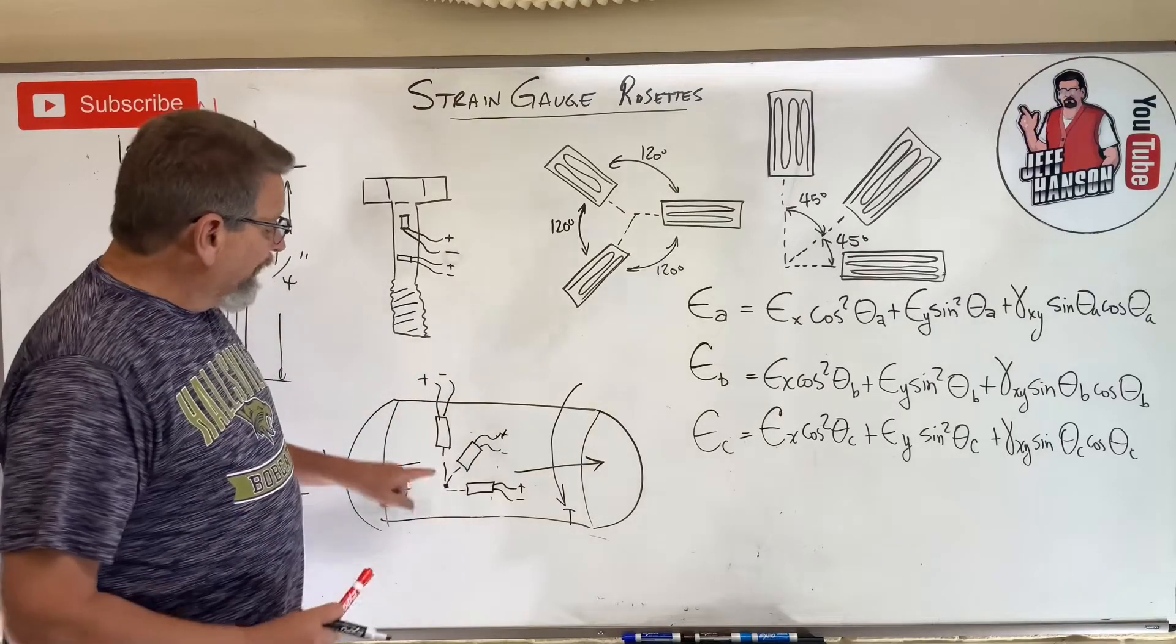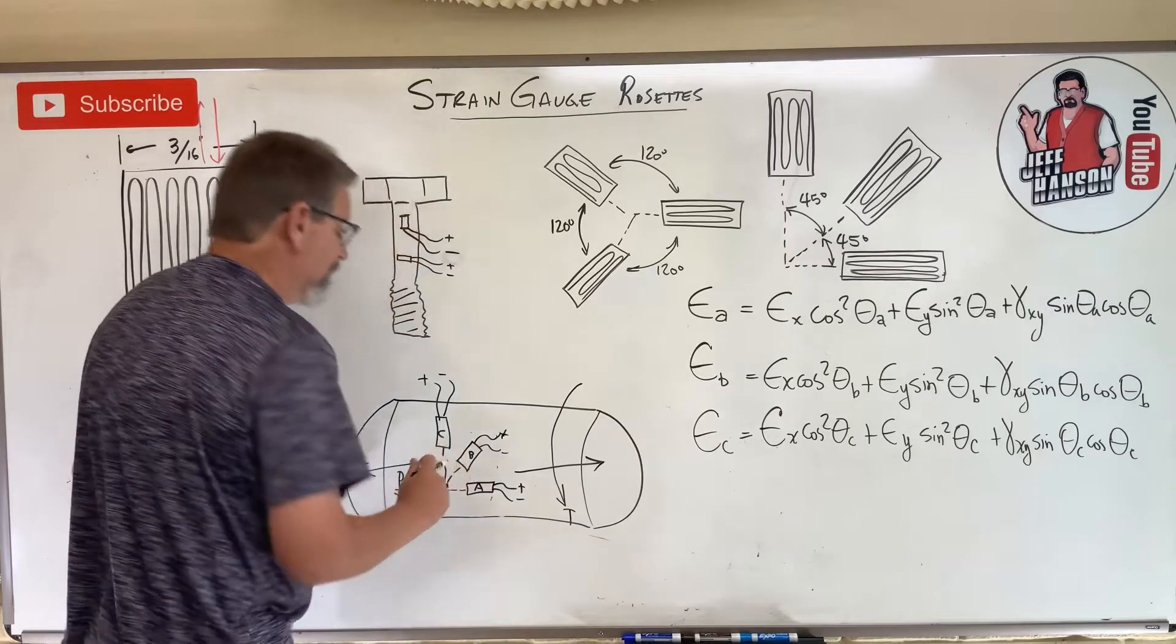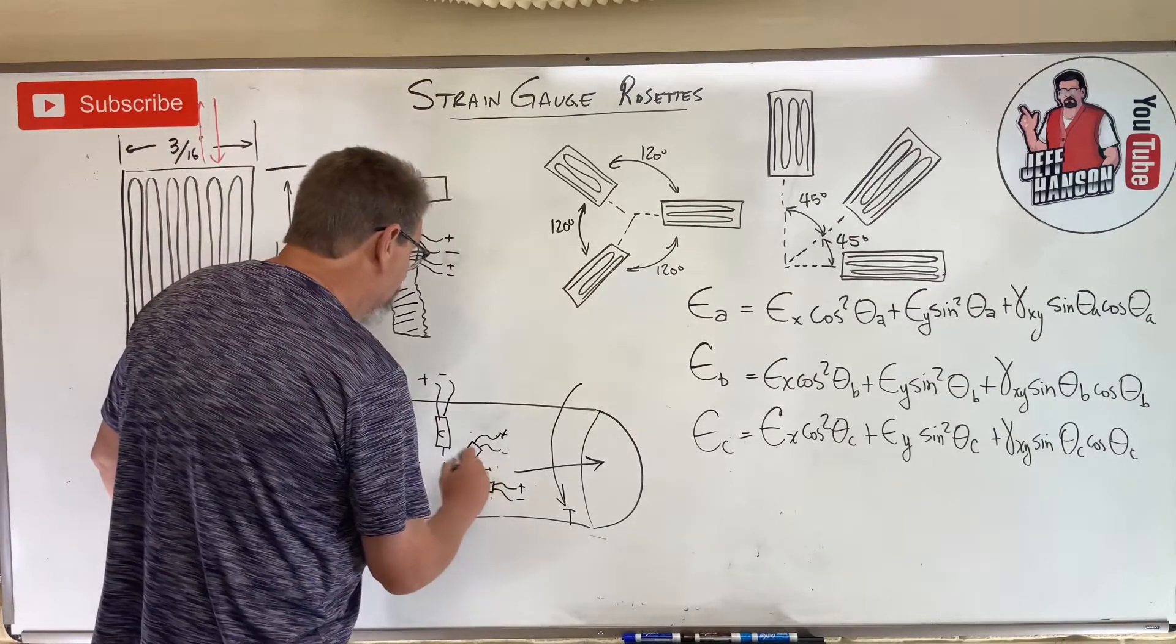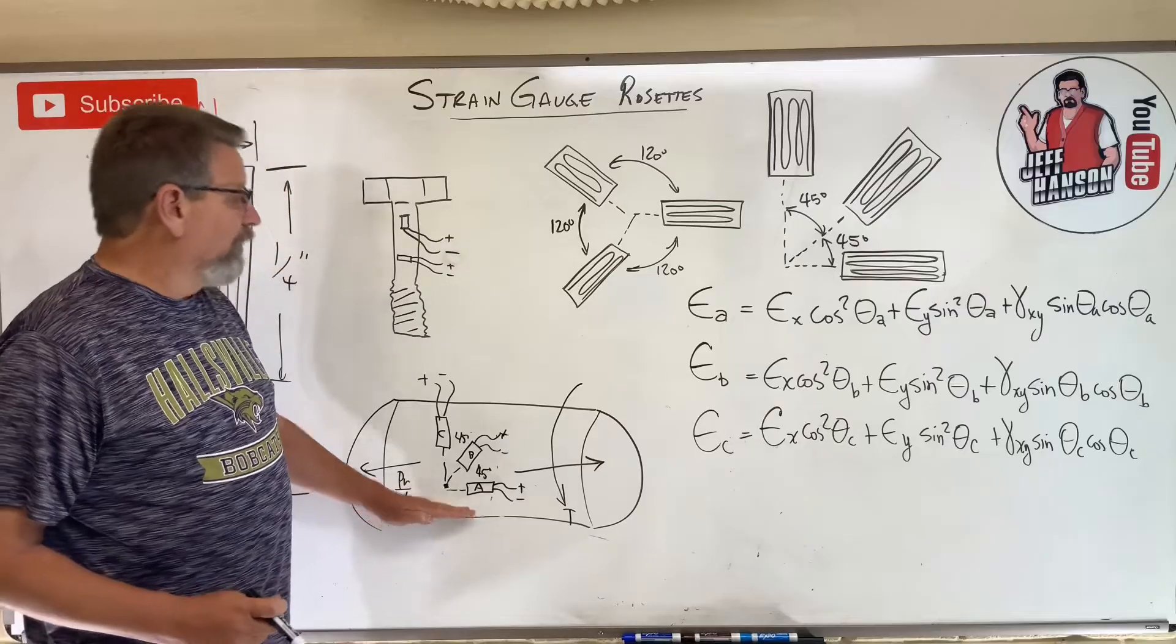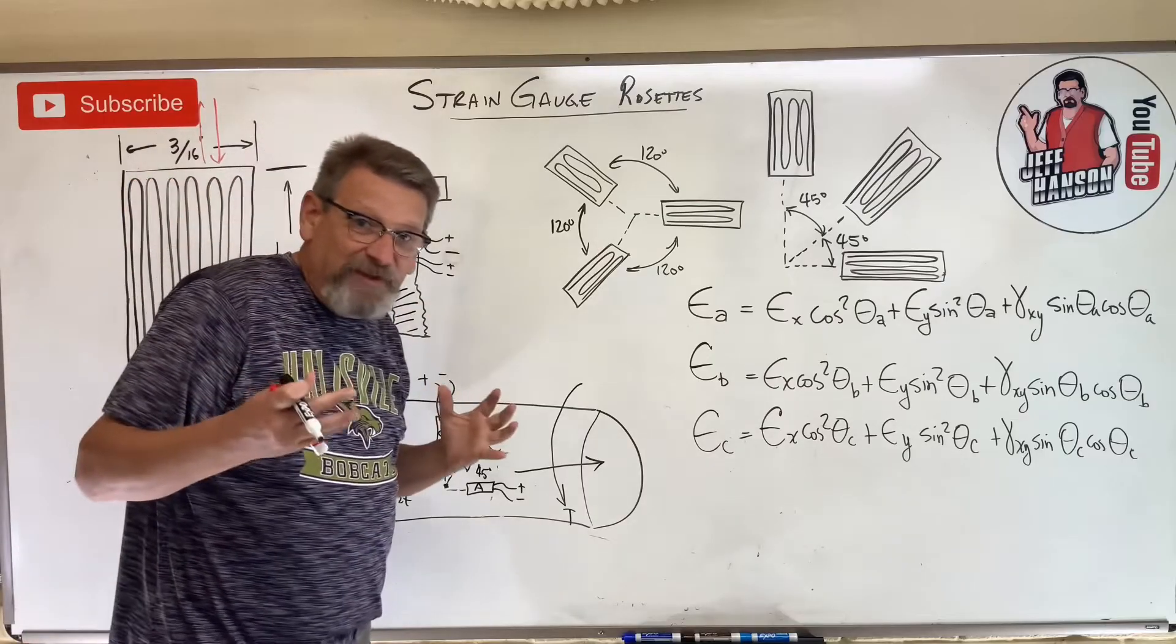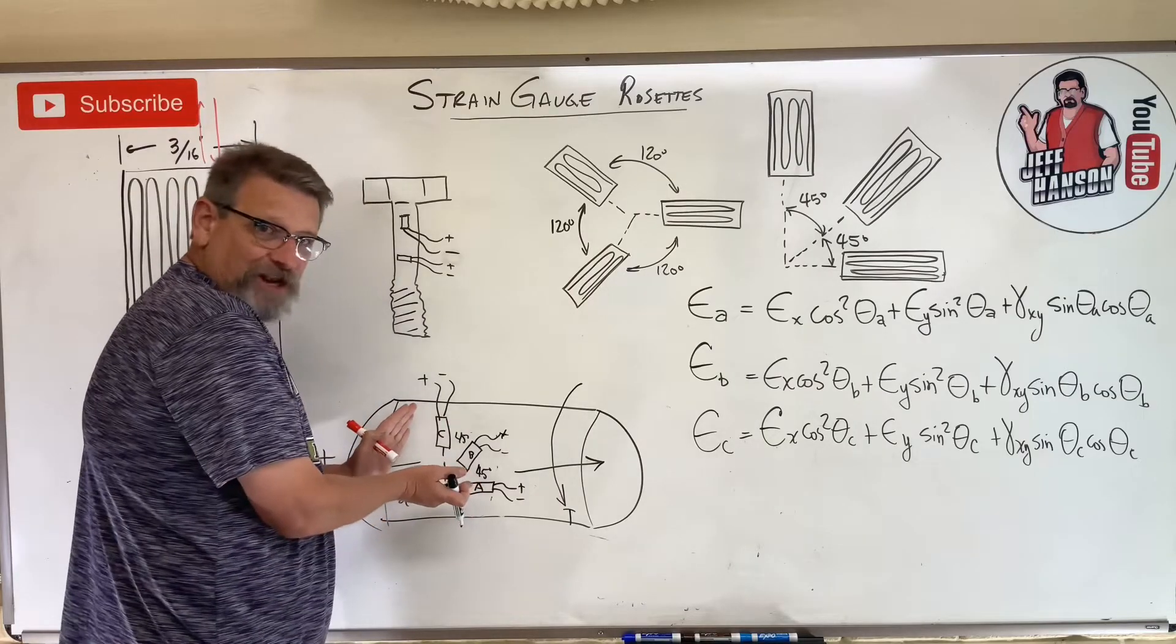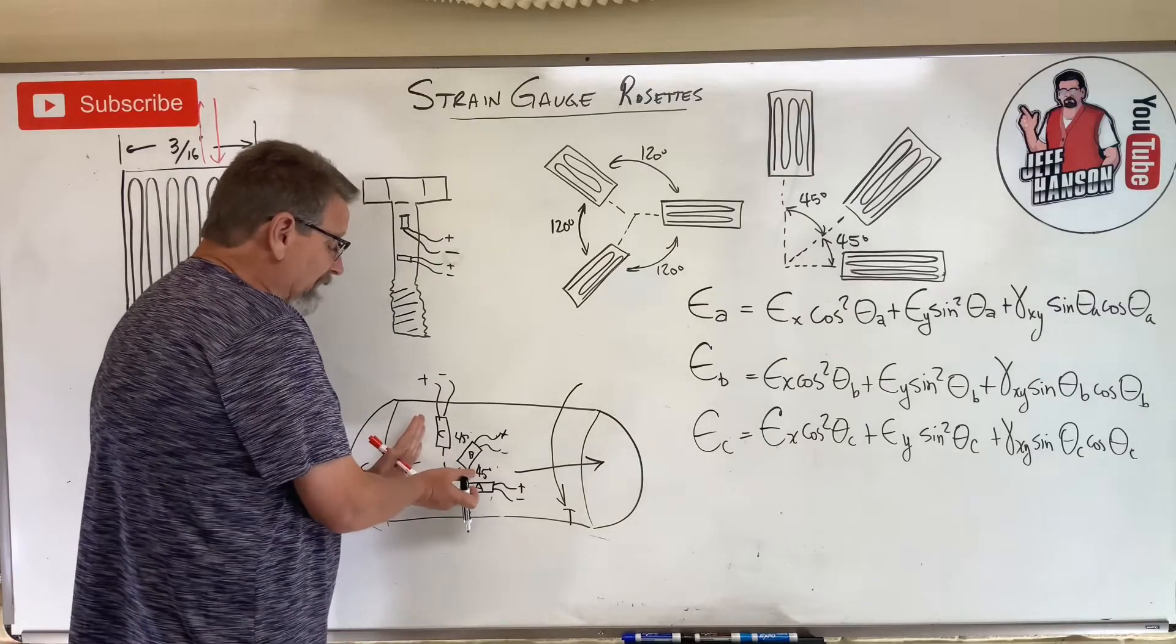Now put the pressure on it, put the torque on it, and we're just going to take these readings. Let's say that these are 45 degrees and 45 degrees. Well, guess what we have just created? What is called a strain gauge rosette. A rosette is just an arrangement of a whole bunch of strain gauges. So what does that do? If I don't know the direction of the stress, I can put strain gauges on there and I can measure it at three different directions.